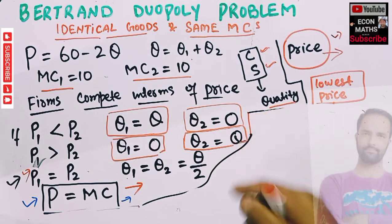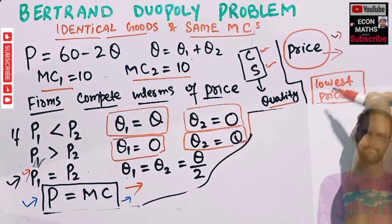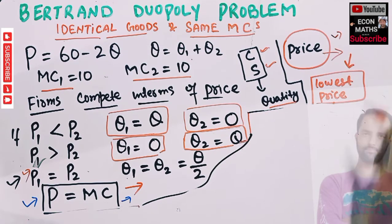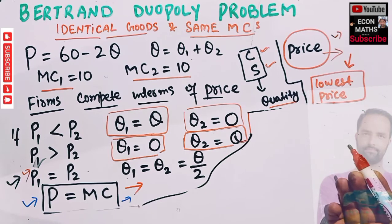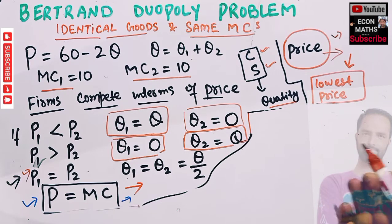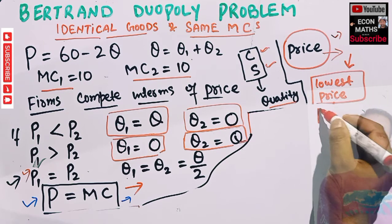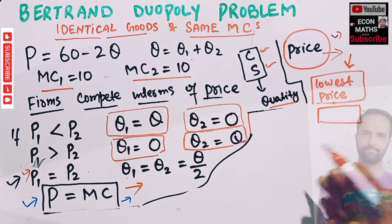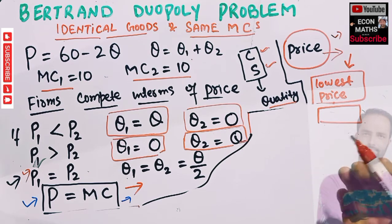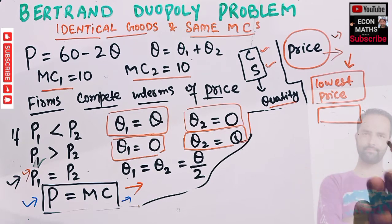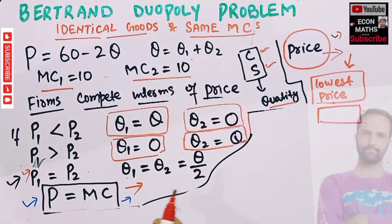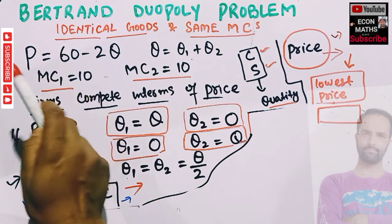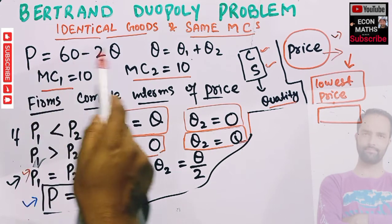The intuition is pretty simple: whichever firm sets the lowest price will capture all the market. If we have two firms and one firm sets the lowest price, that firm will capture all the market, and the other firm gets nothing of the market share.